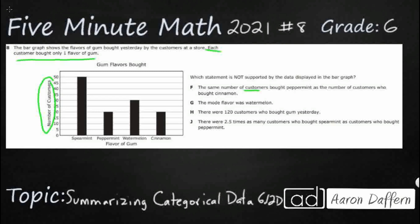So let's put some numbers here. So spearmint is going to be 50, peppermint is going to be 20, we've got 30 for watermelon, and we've got 20 here for cinnamon. So nothing really fancy there.